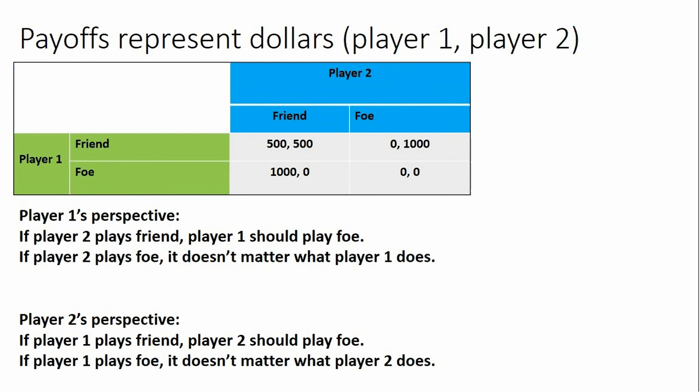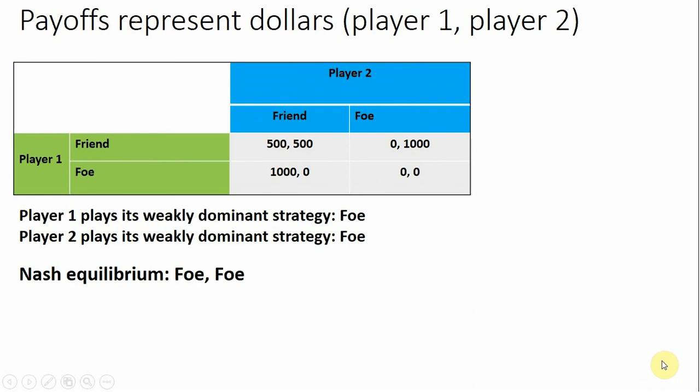For player two, playing foe is superior if player one plays friend. And if player one plays foe, you're no better off or worse off in player two's shoes from playing the foe strategy. So we predict that both players will play their weakly dominant strategy, foe, foe, and that would lead to an outcome of zero, zero, the Nash equilibrium of this game.